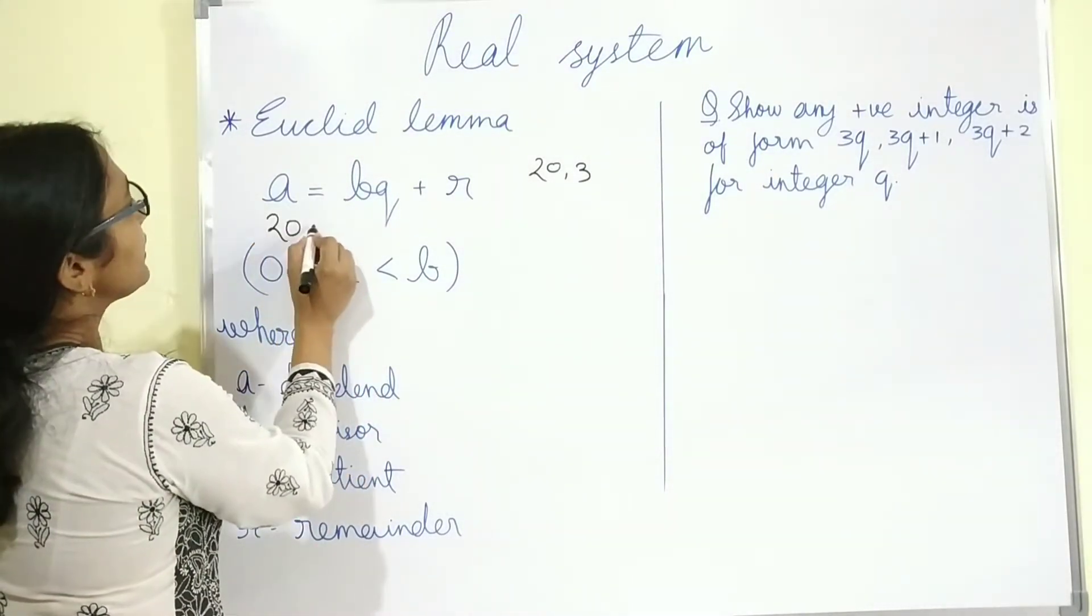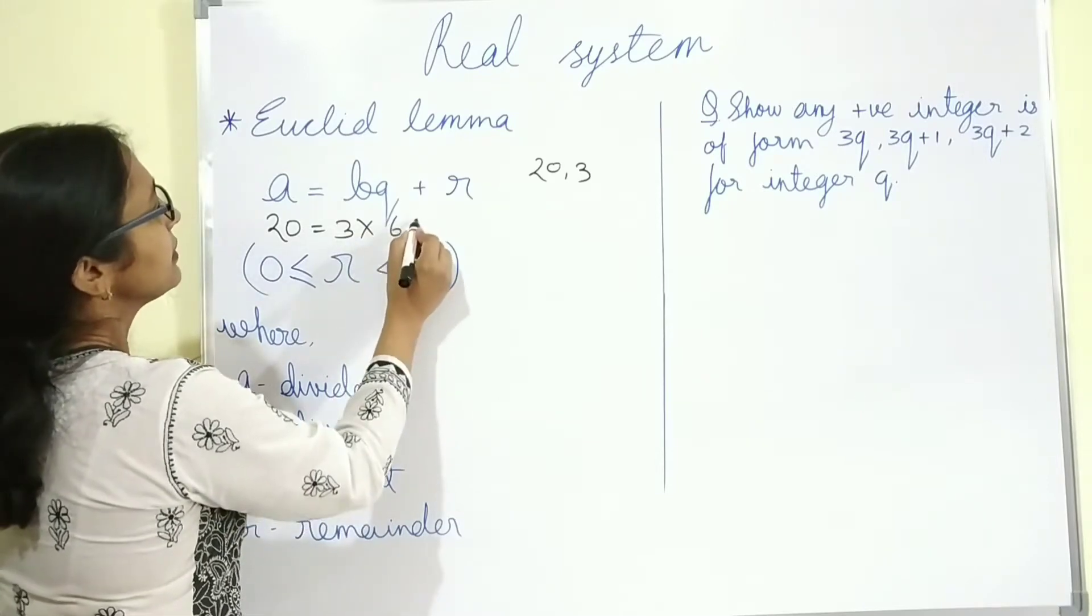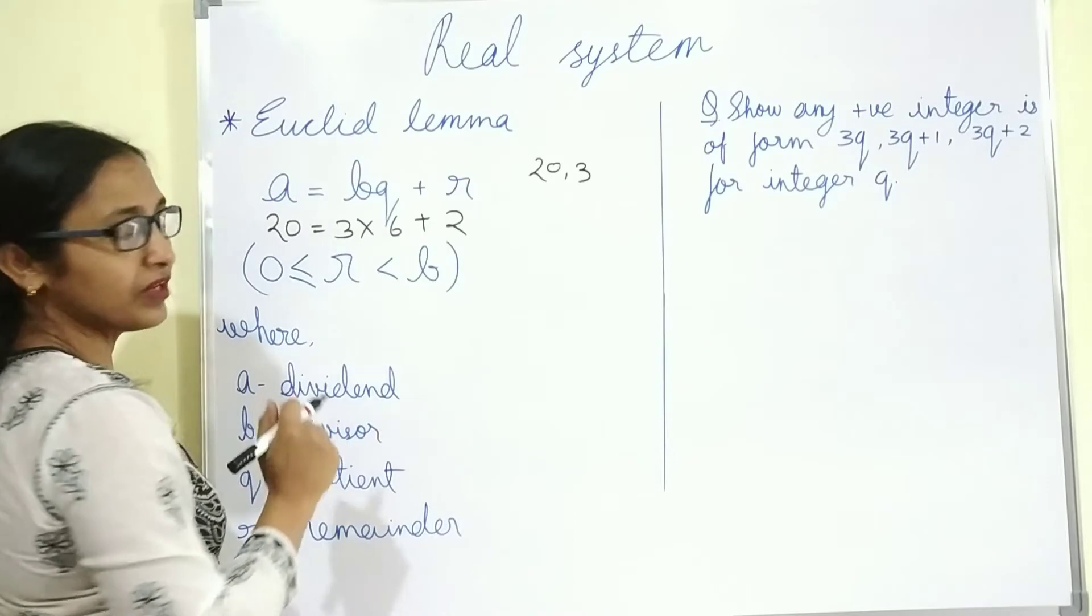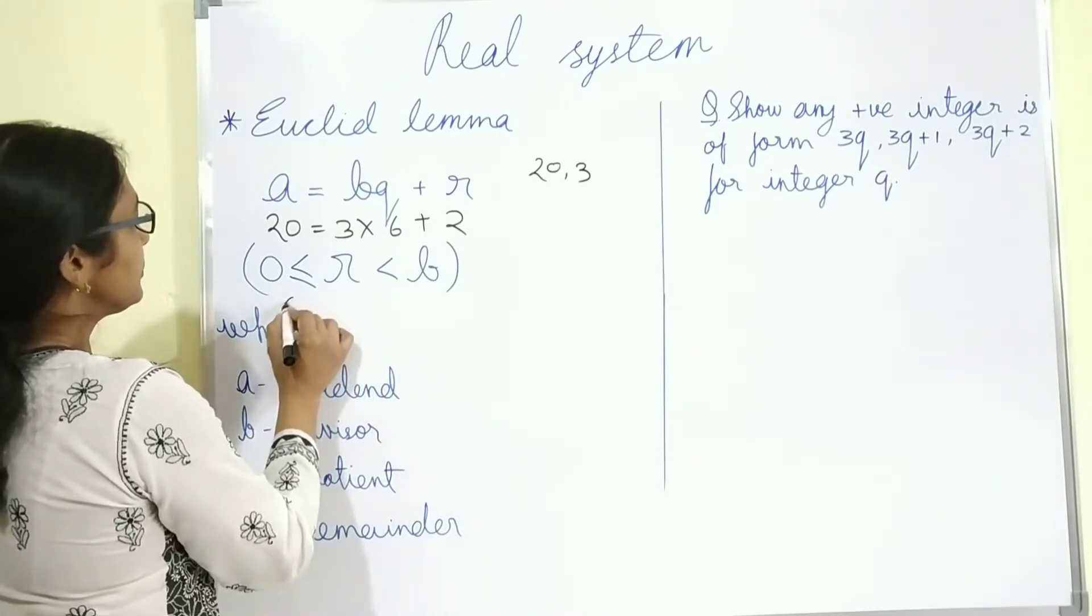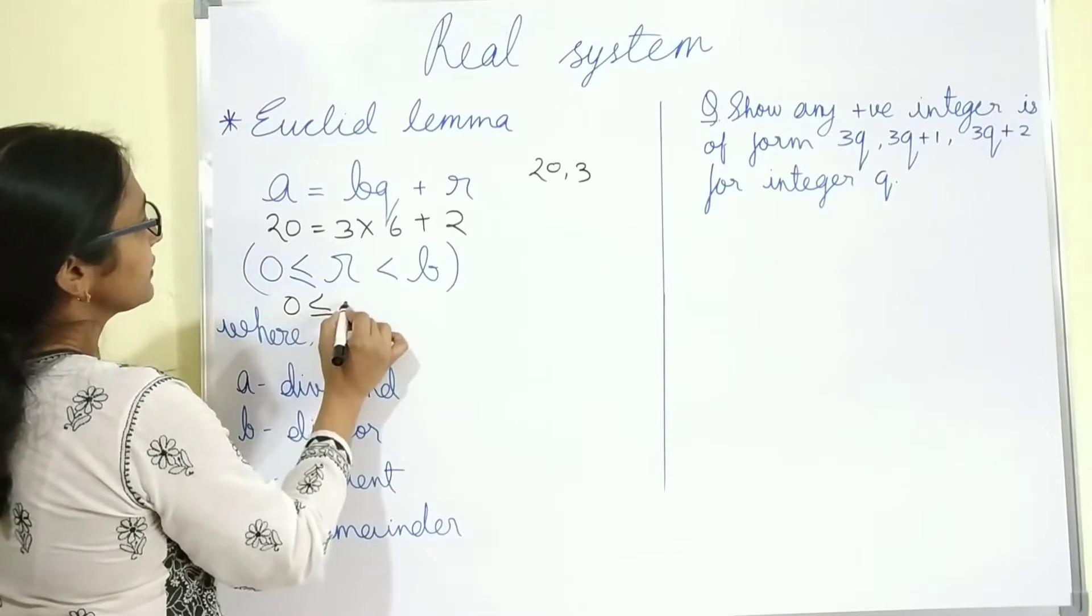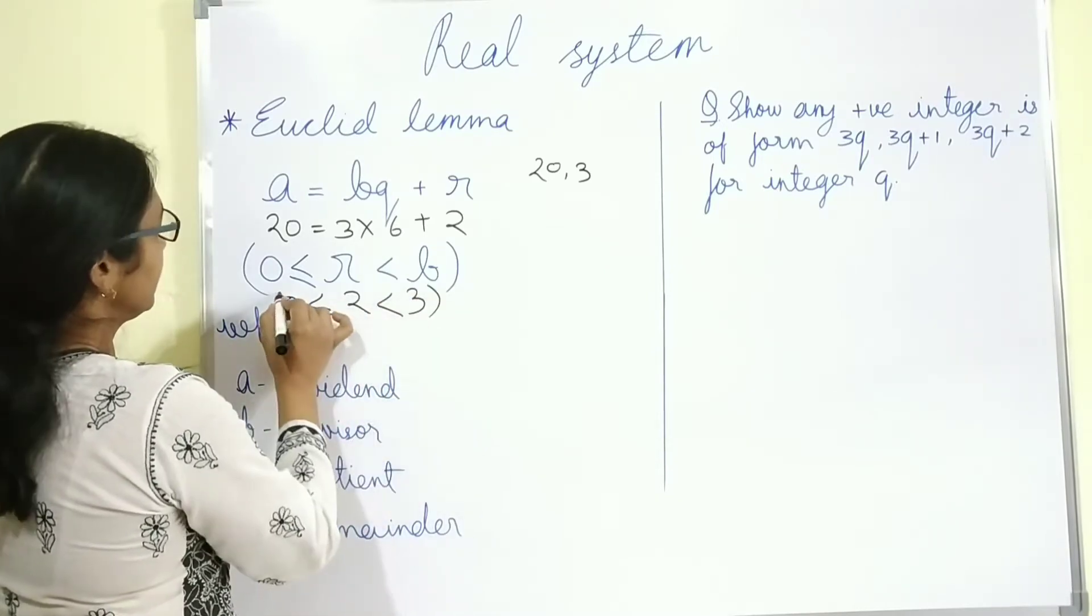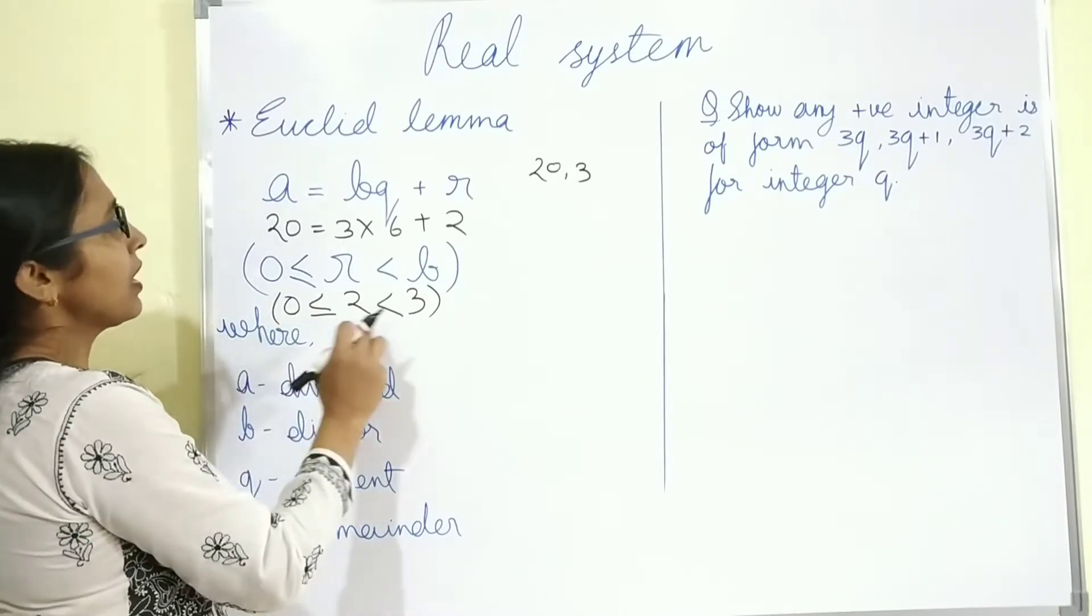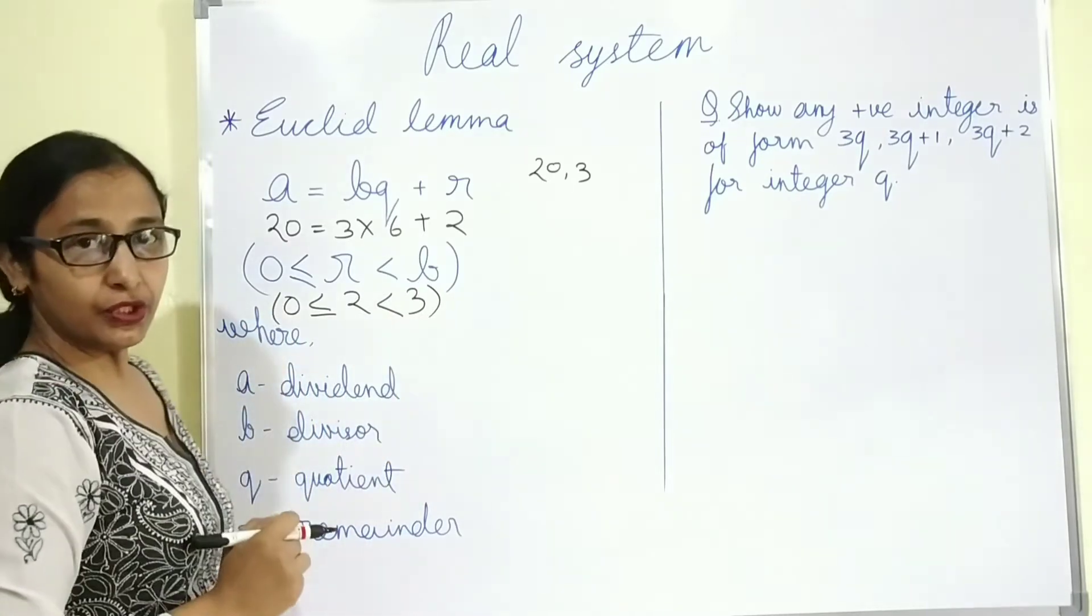So 20 equals to 3 into 6 plus 2. The algorithm will be like this: R that is 2 is greater than or equals to 0 and B that is 3 is greater than 0.